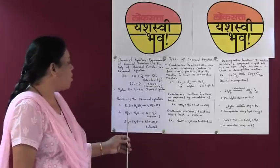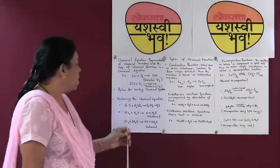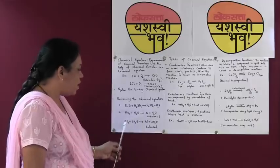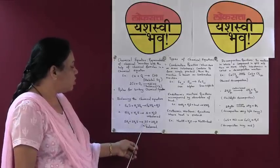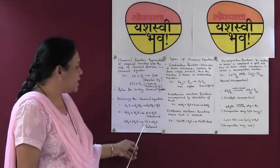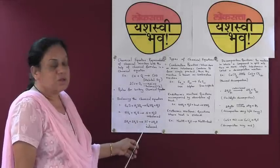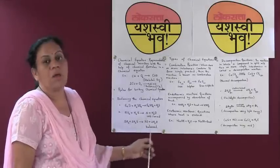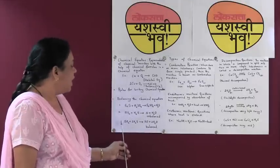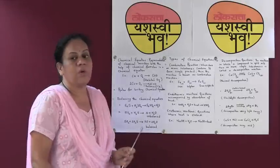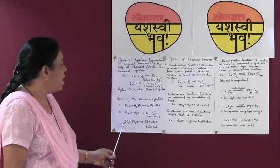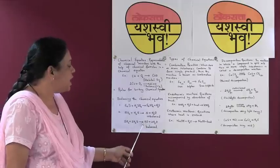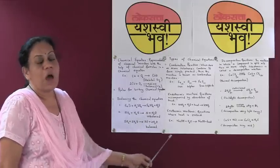Now let us count the number of sulphur atoms. On the left hand side we have 3 atoms of sulphur. Hence we need to put a coefficient of 3 on the right hand side before sulphur, so that the total number of sulphur atoms is the same on both sides. Therefore the balanced chemical equation is: SO2 + 2H2S → 3S + 2H2O. This is a complete balanced chemical reaction.